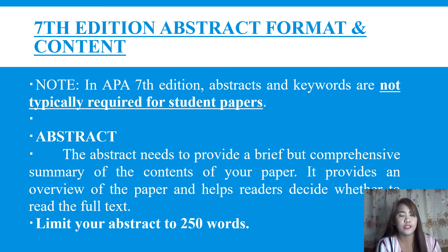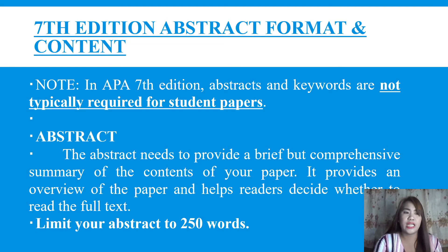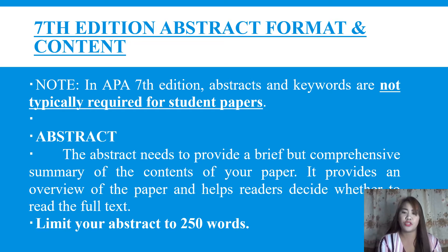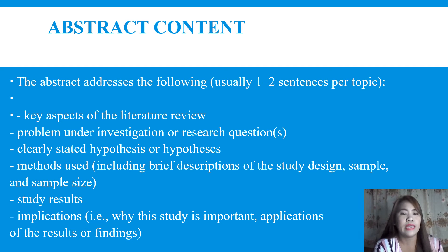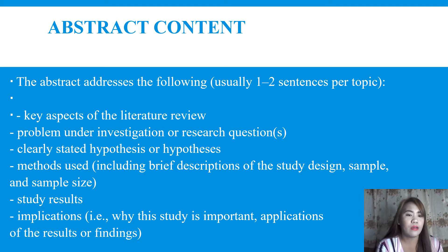You need to limit your abstract to a maximum of 250 words. Usually the abstract includes a few contents covering the introduction, research methodology, your population, your research problem, and the conclusions and recommendations. The abstract contents address the following — usually one to two sentences per topic. Number one is the key aspects of the literature review, which corresponds to the background of the study.